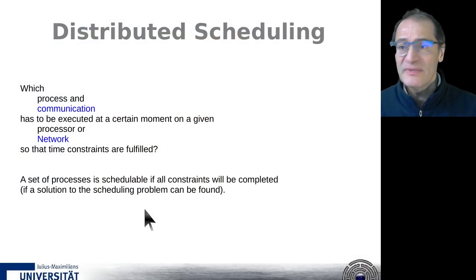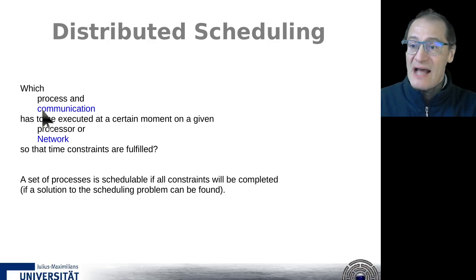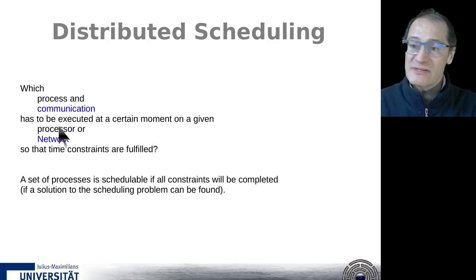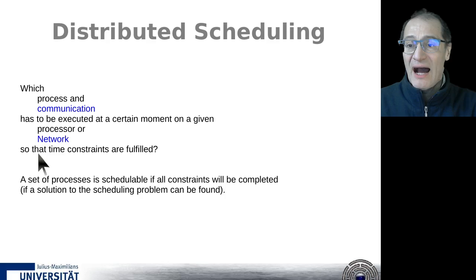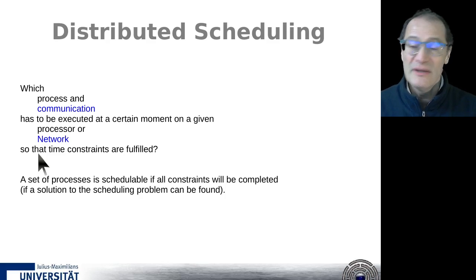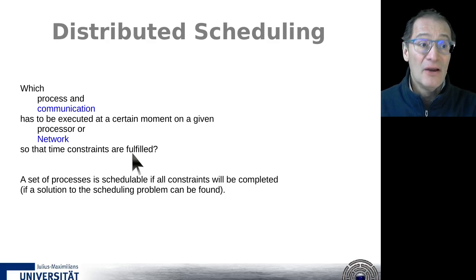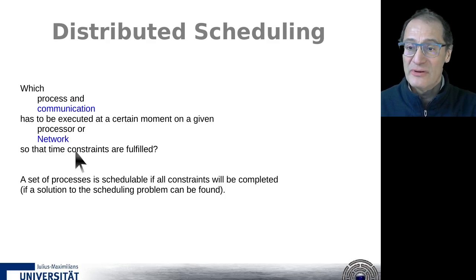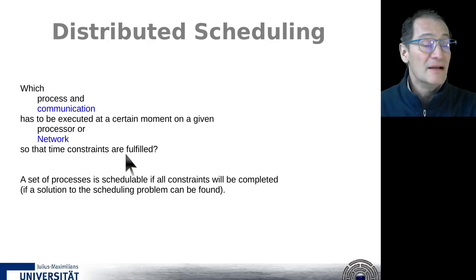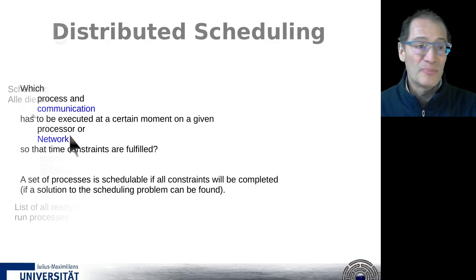We have a set of processes and communications — messages — which shall be executed. These processes have to be assigned to processors and the communications shall be assigned to network or communication links. Importantly, we have a real-time system, so when we find an allocation, we shall try to have an allocation where all constraints are fulfilled. Only then can we say this system is schedulable. If all constraints are feasible and fulfilled, we can have a schedule; else we cannot execute this set of tasks and communications in the computer network we have.